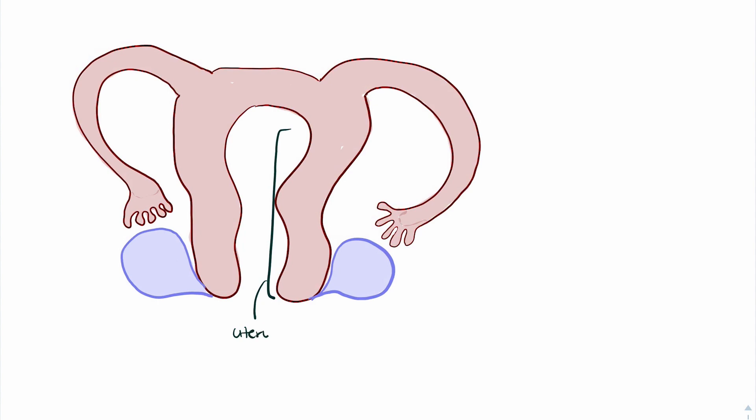Before we start talking about that, we can identify the internal genitalia can be broken down into the uterus, the fallopian tubes, and the ovaries, each which have their individual subsections.